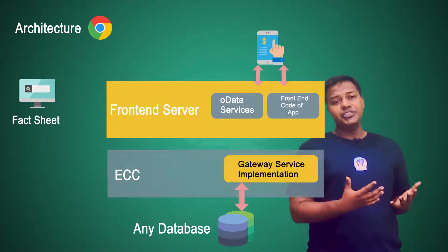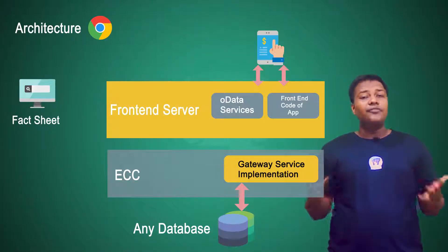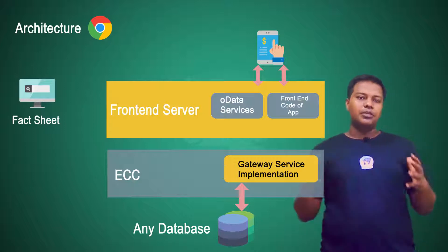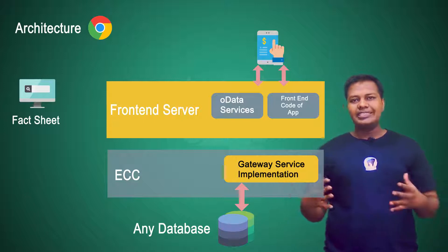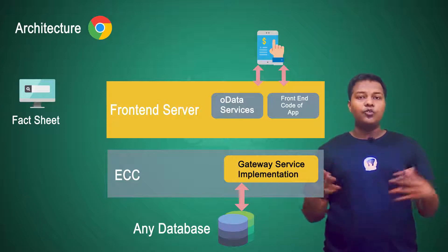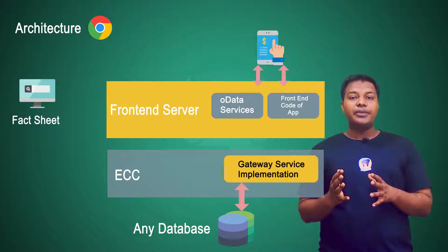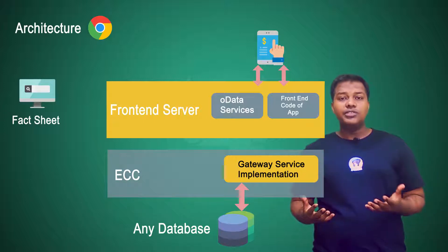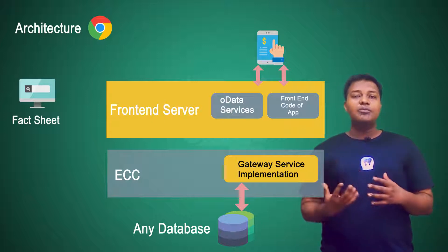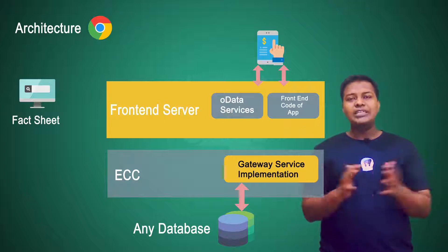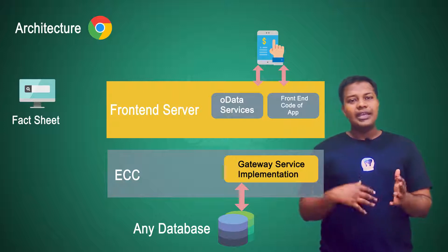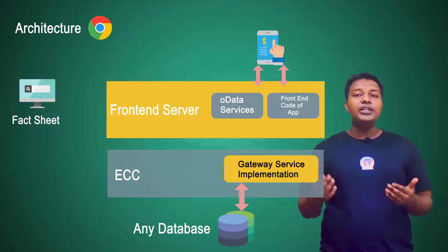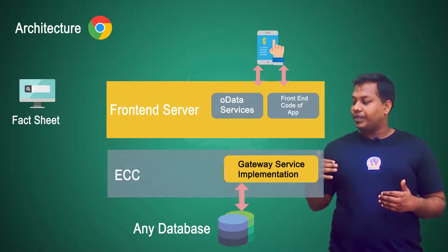As mentioned in the previous section, in a fact sheet application you would have to search for a particular term within your entire database and find contextual or relative information. This is only possible if you are using SAP HANA as a backend, because it is very fast to go through the entire ERP data since data is stored in memory. Therefore, a fact sheet application can only run on SAP HANA database.